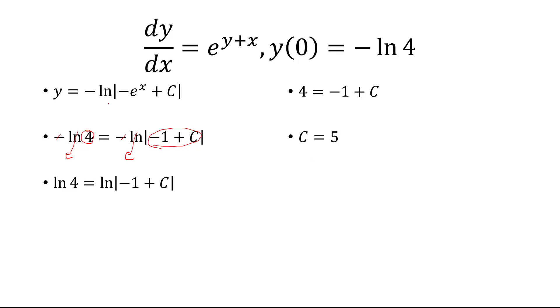Now we go back to this solution here and replace c with 5. So our final answer is y equals negative ln of absolute value of negative e^x plus 5.